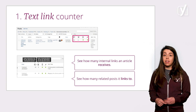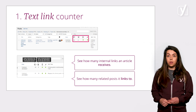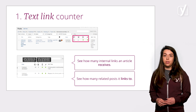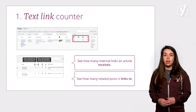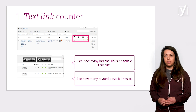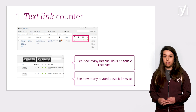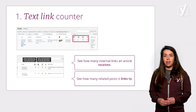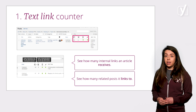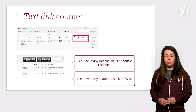First, the text link counter. With the text link counter in Yoast SEO, you can filter your cornerstone articles in the post overview and see how many internal links a post receives and how many posts it links to. With the text link counter, you can see at a glance if your cornerstone content gets enough links from other related posts.